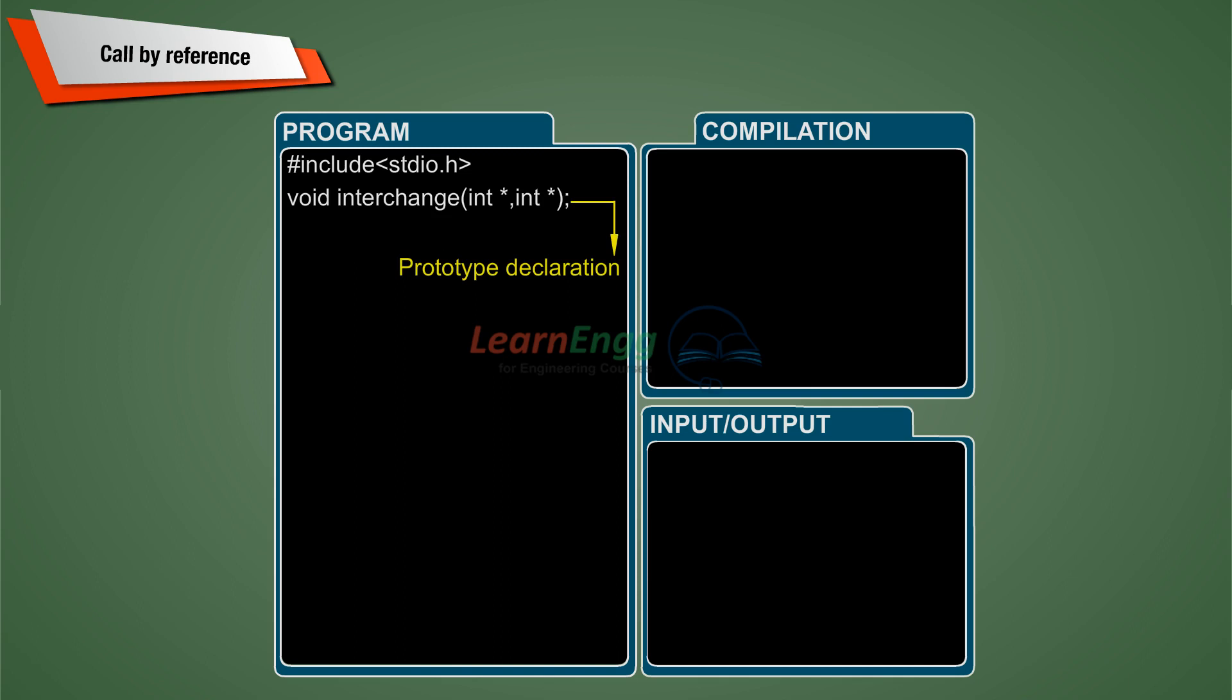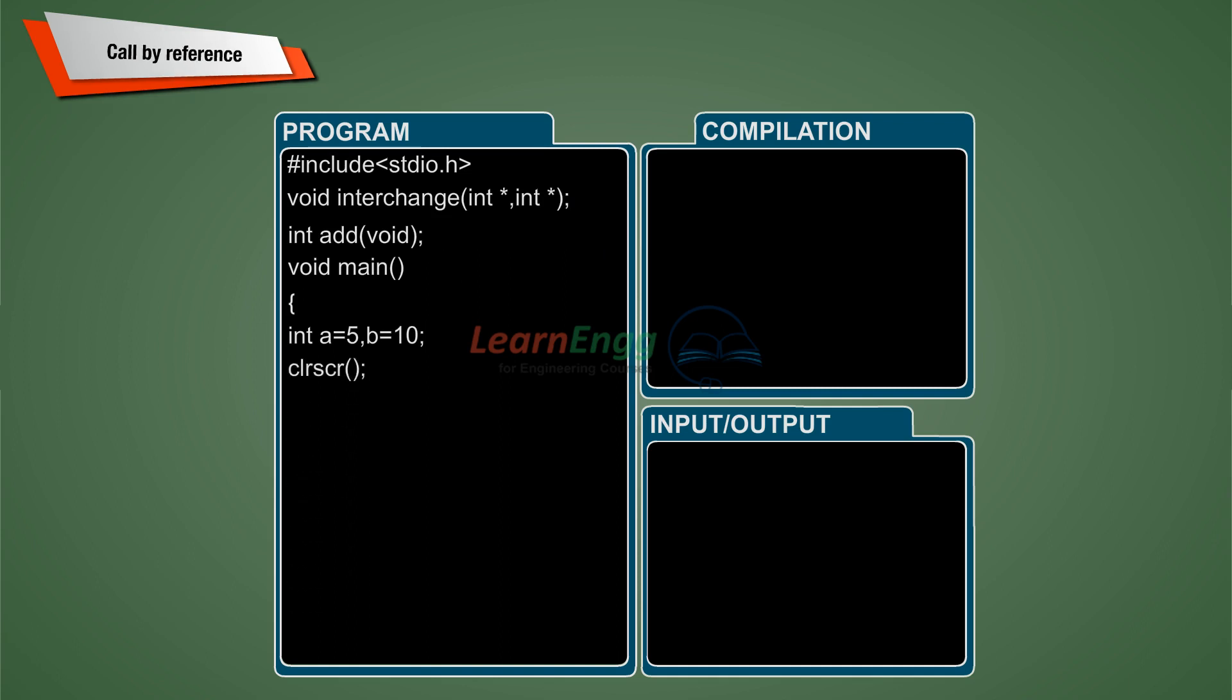Prototype declaration. Void main function from where the program execution starts. Pass address to function. The variables a and b are assigned to values 5 and 10 respectively. Then the interchange function is called with the address of a and b and it interchanges the a and b values.